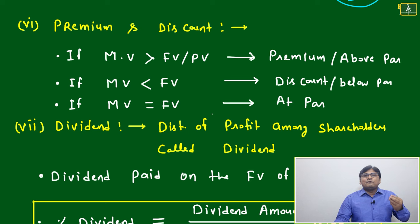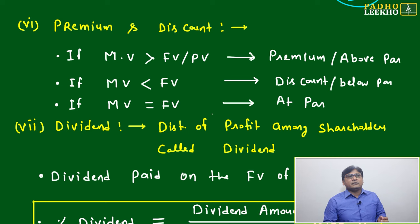Blue chip shares are there with 100% guarantee based on the last four to five years pattern. But basically, shares are categorized as premium and discount. Premium is simple: if market value is more than face value, that is called a premium share or above par share.